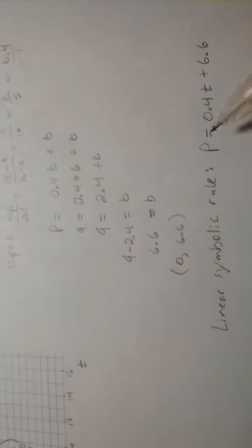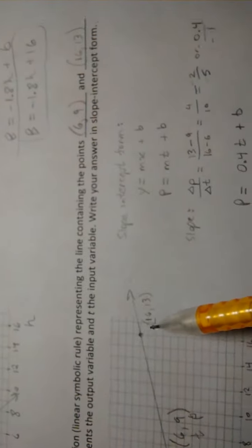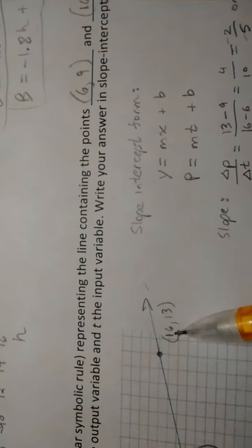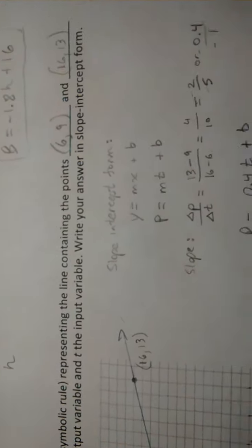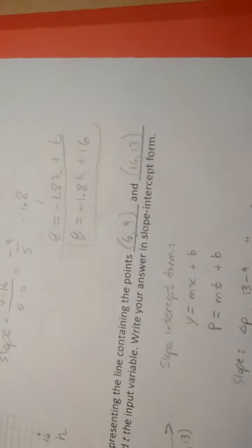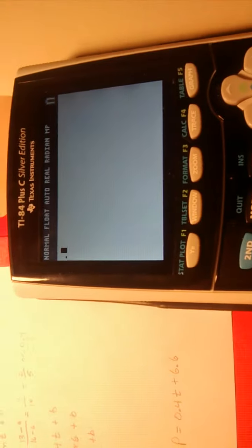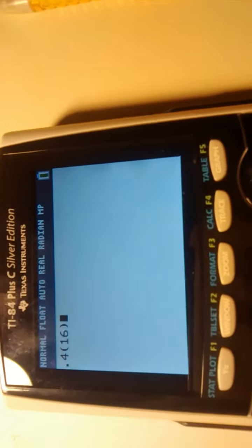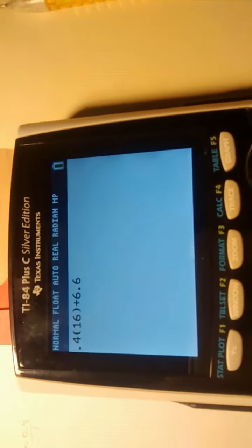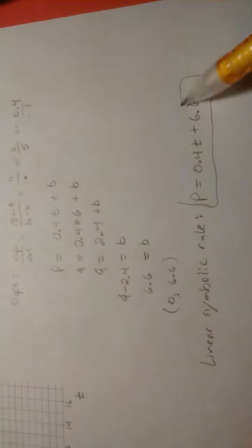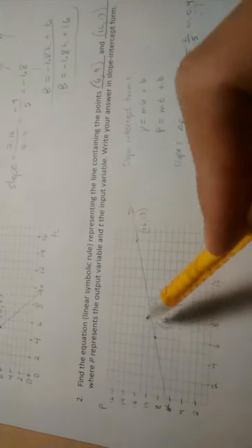And I would say go ahead and check. Let's check with this point here and plug in a 16 into our symbolic rule and verify if we get a 13 coming out of there. So I'm going to do that. I'll prove it to you. So 0.4 times, what is that, 16. Adding on a 6.6, that better give me a 13. And it does. So I know now that that's my true symbolic rule that represents this line.